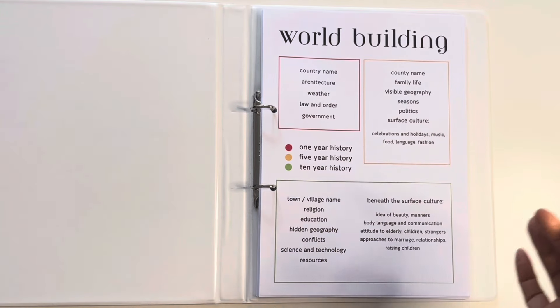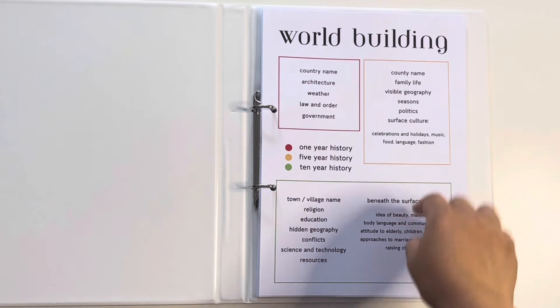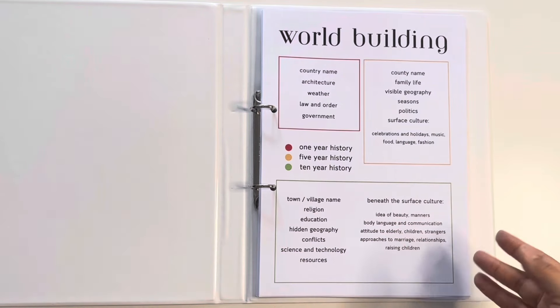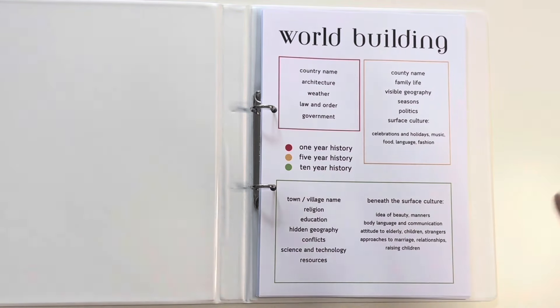Or if my ADHD brain thinks of something on a whim that I have not already included in the orange and the green, I can then come and I can include it and it will be canon and I will have a record of it.